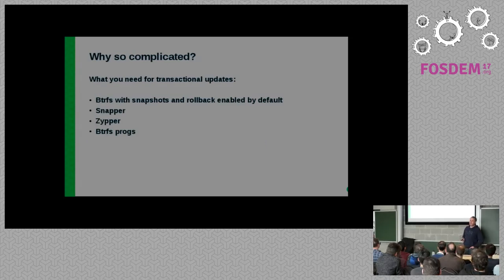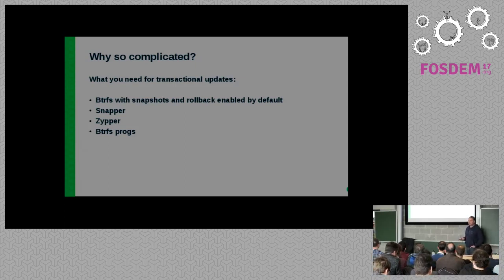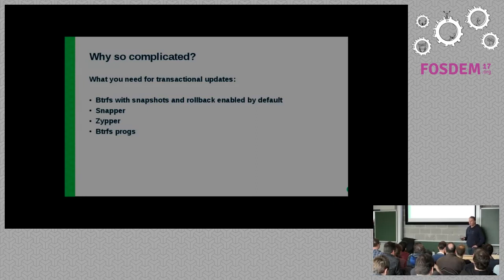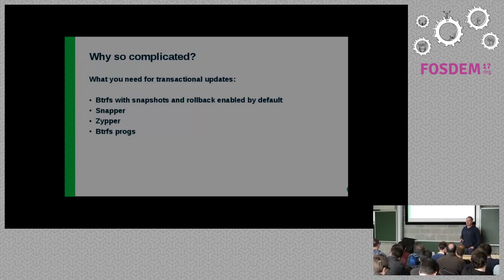In the end, it's quite easy if you have a current OpenSUSE or SLES version. All you need is BtrFS with snapshots and rollback enabled by default, Snapper to manage the snapshots, Zypper to update the system, and of course the BtrFS utilities to make some modifications to the file system. If you don't want to use RPM and these tools, you can also use other package managers by adjusting the script. In the end it's really generic and it works with everything that can do snapshots and rollback.